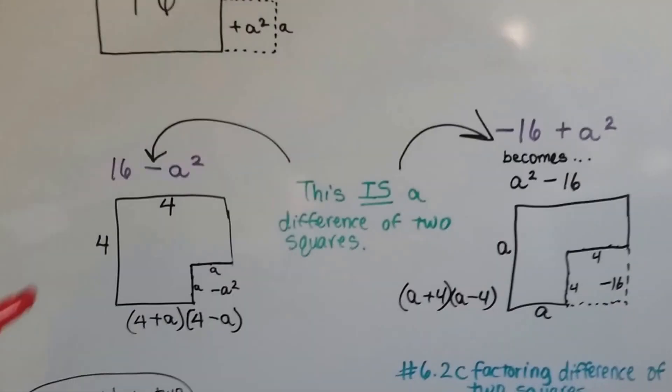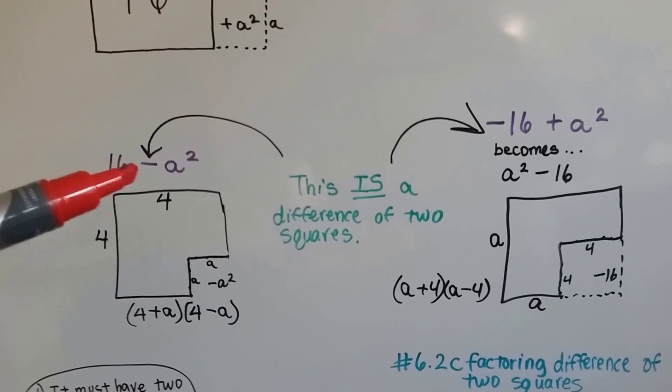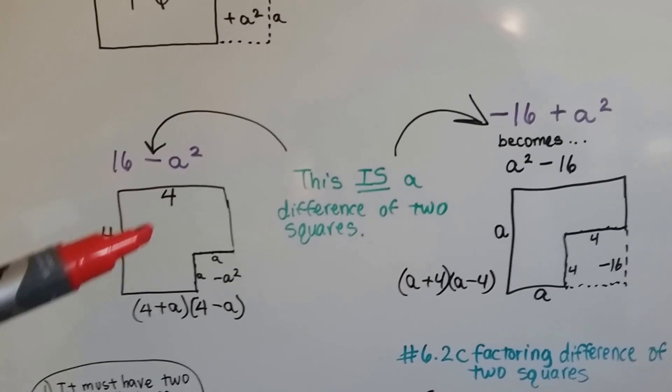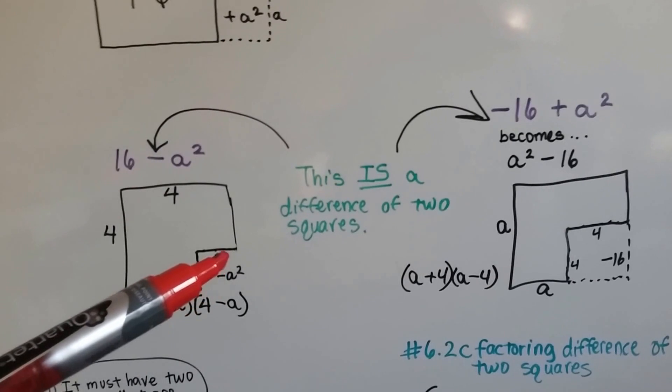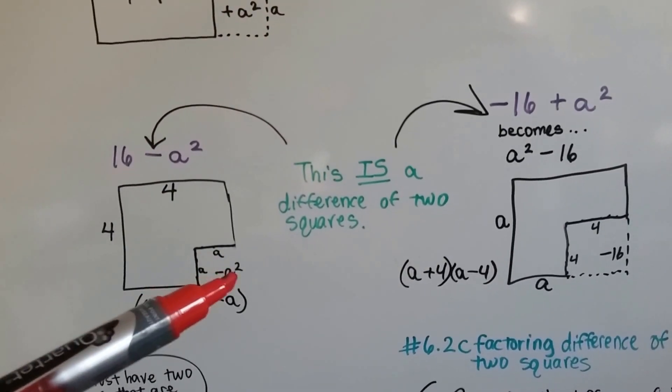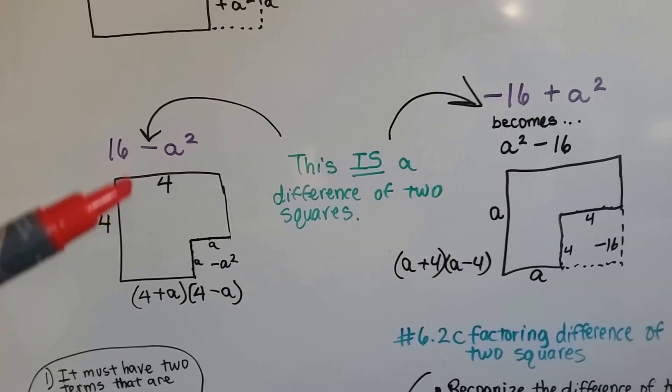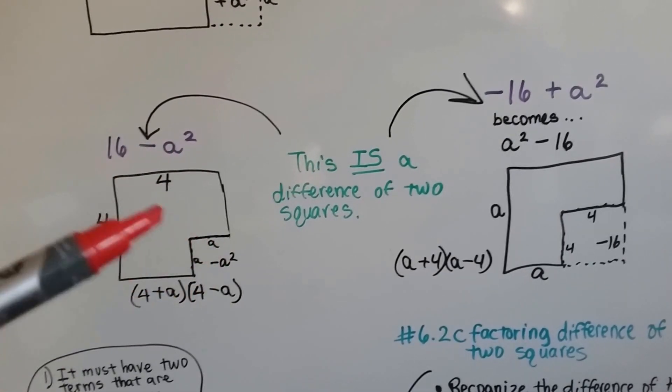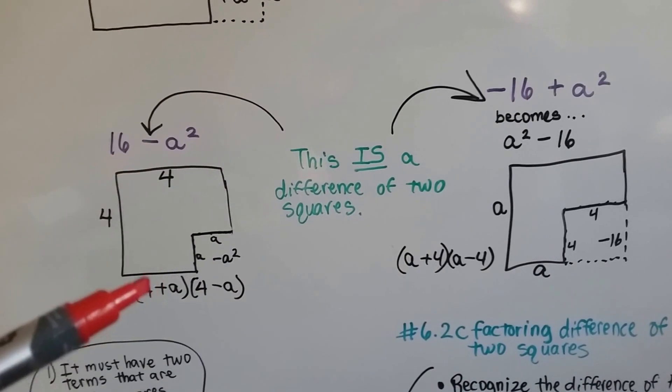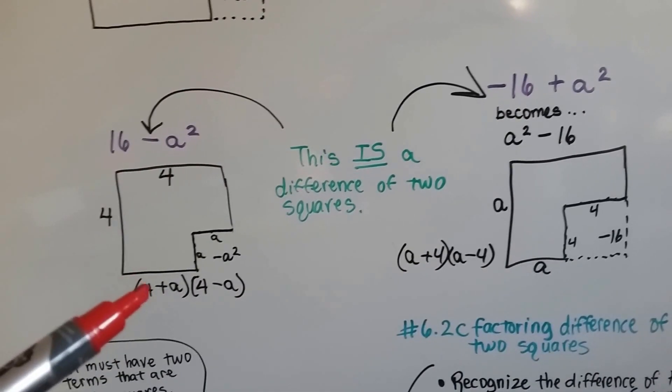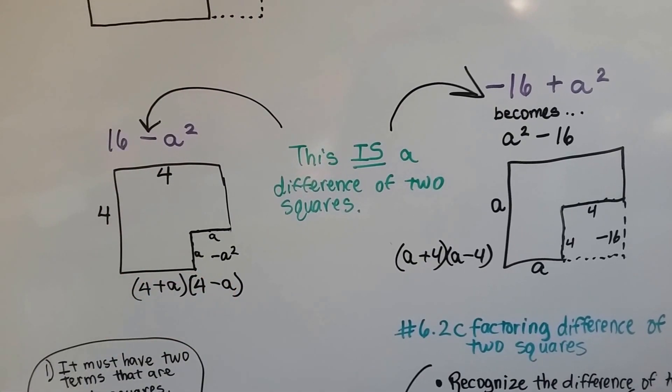Now let's look at these. If we had 16 minus a squared, well, then we'd have a 4 here and a 4 here, and an a here and an a here. So we'd be taking away that a squared. This is the difference of two squares, because we're taking away this one. The word difference means subtraction. So it would be 4 plus a, 4 minus a to find that area.